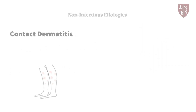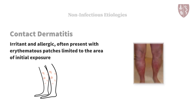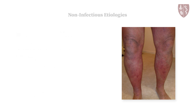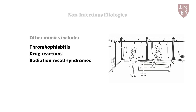Contact dermatitis, both irritant and allergic, often presents with erythematous patches limited for the most part to the area of initial exposure. The lesions can be warm and painful, but systemic signs of infection are absent. Other mimics include thrombophlebitis, drug reactions, radiation recall syndromes, and insect stings or bites.